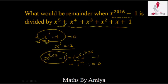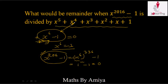So our dividend function x^2016 - 1 is divisible by x^6 - 1. And our required divisor x^5 + x^4 + x^3 + x^2 + x + 1 is a factor of x^6 - 1. By concept number 2, since x^2016 - 1 is divisible by x^6 - 1 and our divisor is a factor of x^6 - 1, we conclude that x^2016 - 1 is divisible by x^5 + x^4 + x^3 + x^2 + x + 1, and the remainder is 0.